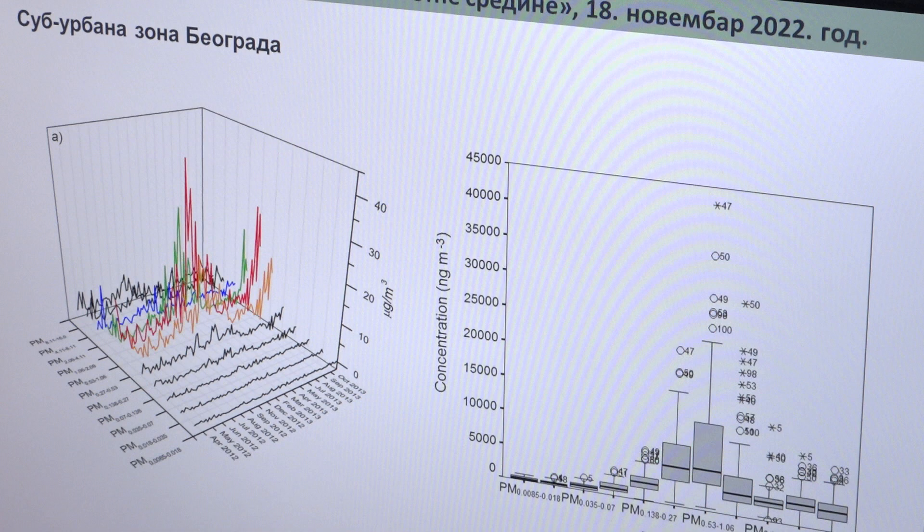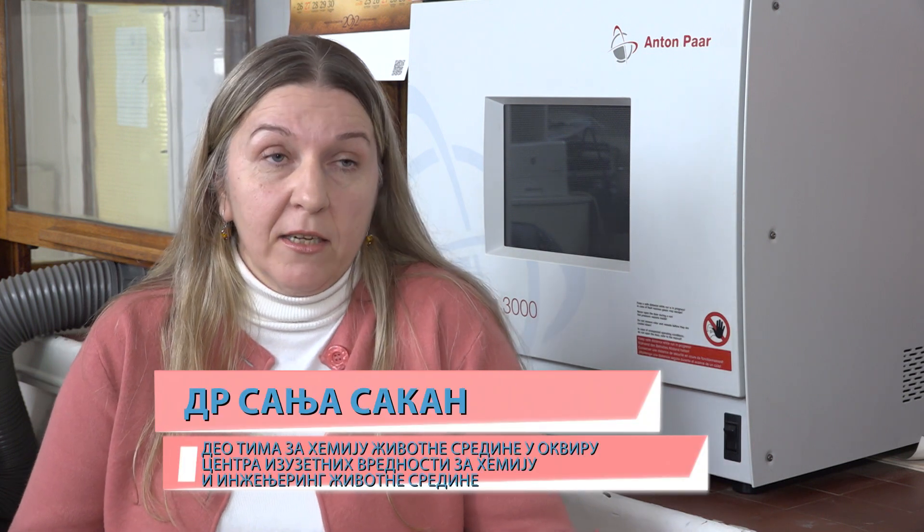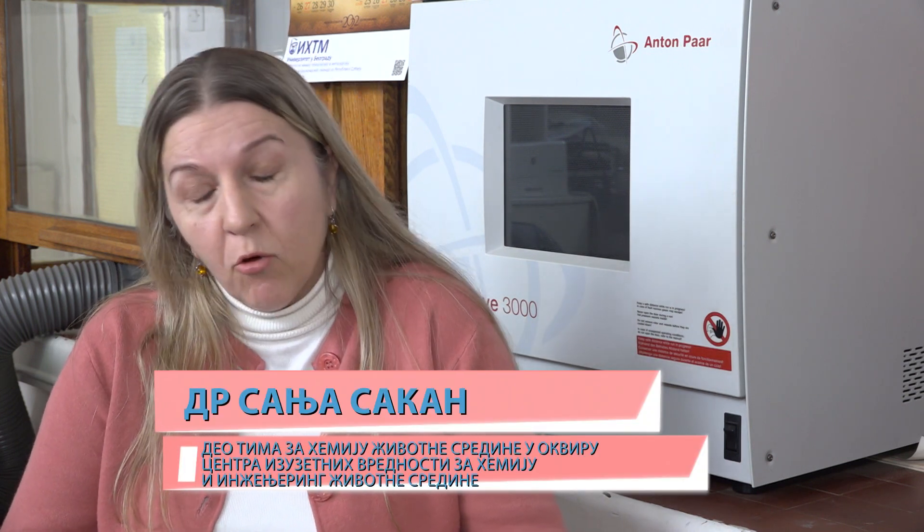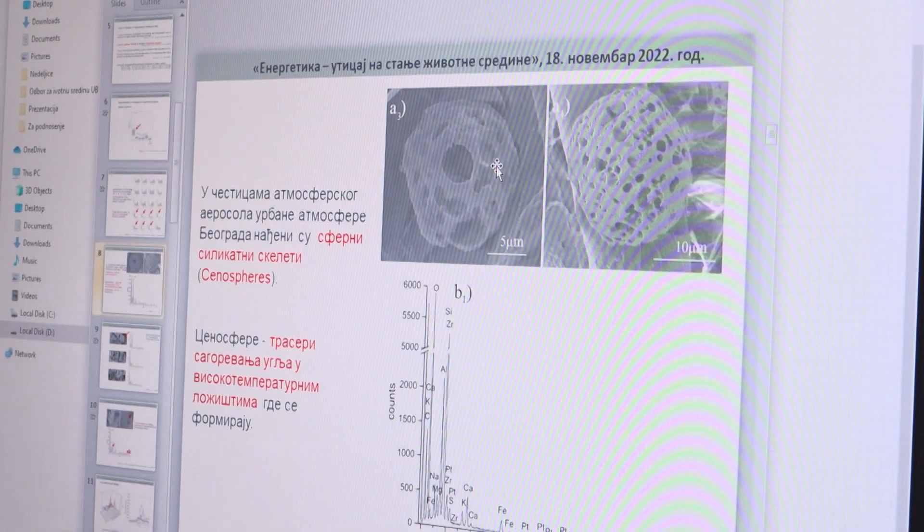A takođe, deo naših novih istraživanja, takođe isto po prvi put u Srbiji, je primena magnetizma u ispitivanjima životne sredine. To se u našem slučaju odnosi na merenje magnetne susceptibilnosti koja je povezana sa sadržajem toksičnih elemenata. I zašto je sad to važno? Zato što je merenje te magnetne susceptibilnosti veoma brza metoda i može se radi u terenskim uslovima. Hemijske metode su dosta skupe i potrebno je duže vremena da se dođe do nekih prvih rezultata.